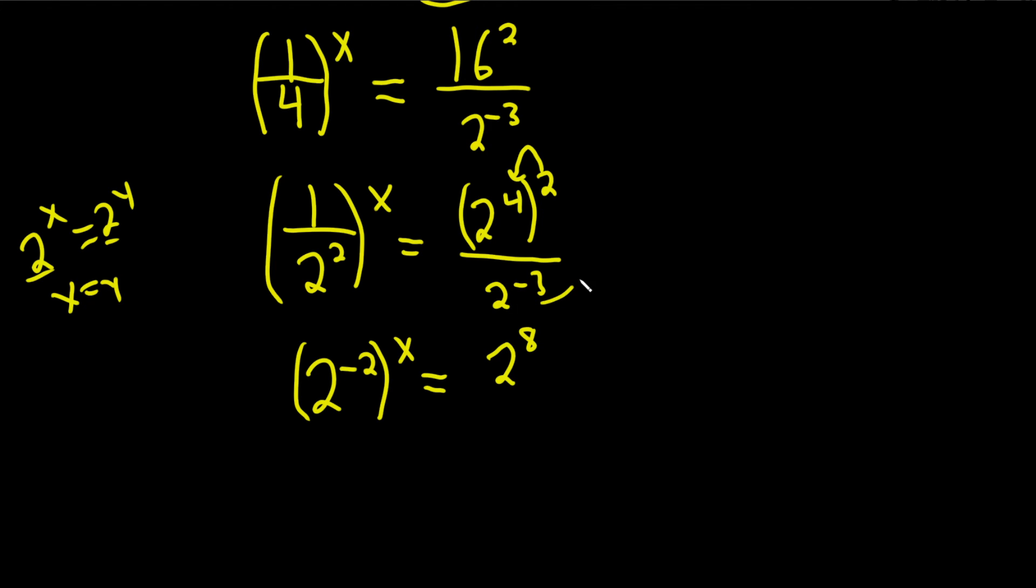And I'm going to go ahead and bring this one upstairs, so it becomes 2 cubed. It becomes positive when you bring it up, the exponent. Here you multiply, so you get 2 to the negative 2x equals, here you add the exponents, so you get 2 to the 11.